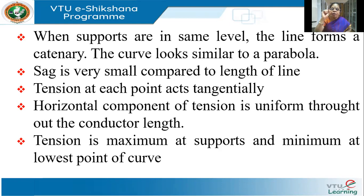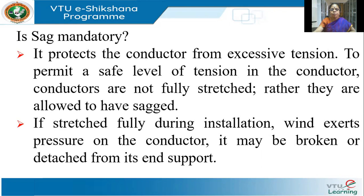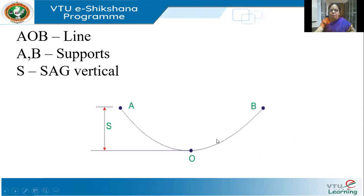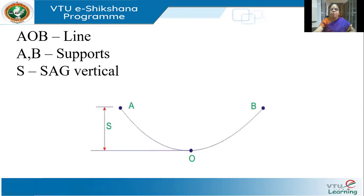At every point along the conductor, the tension acts tangentially to the conductor. The horizontal component of tension is uniform throughout the length of the conductor — throughout AOB it is uniform. The tension is maximum at the supports A and B and minimum at the lowest point O.